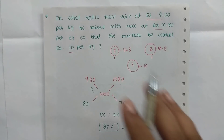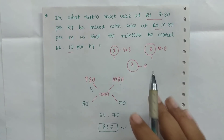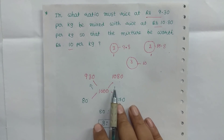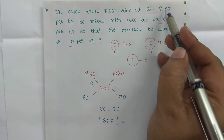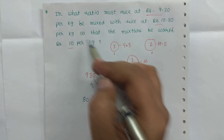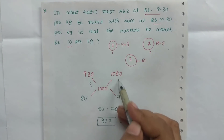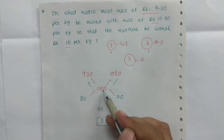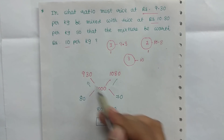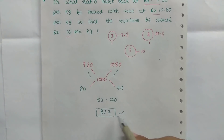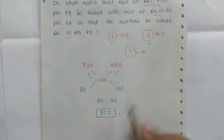We have 10.80 per kg. This type of sum has 3 values: the mean value in the middle. We have two values and a mean value. Just subtract — we have to subtract to get the final ratio. So that's the end.